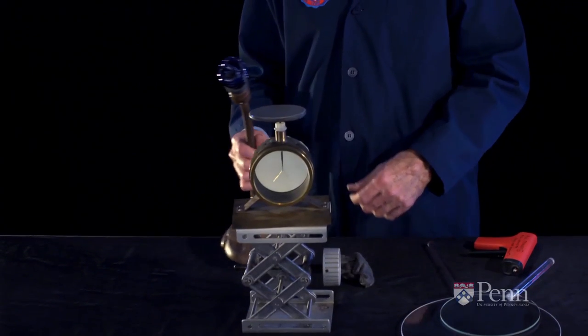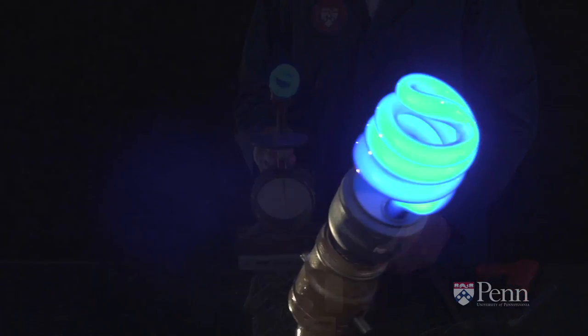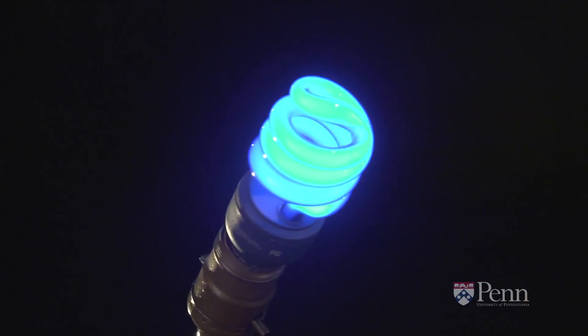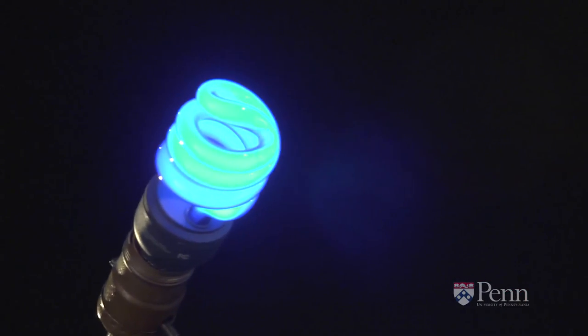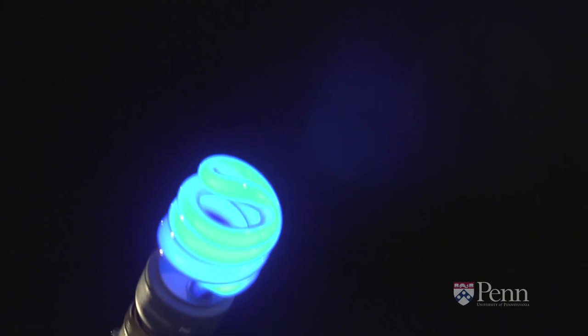There's already light striking the zinc, and nothing's happening. The bulb that we're working with, however, is an ultraviolet bulb. That is light that is a shorter wavelength than violet light.